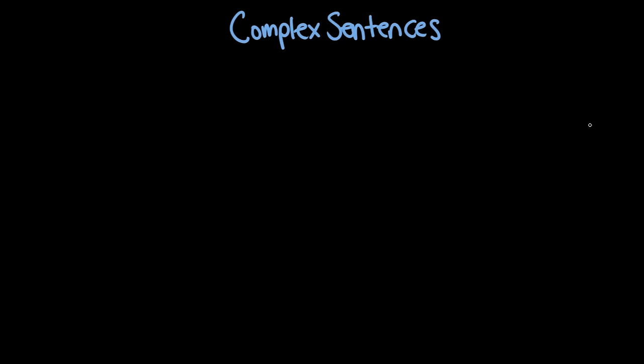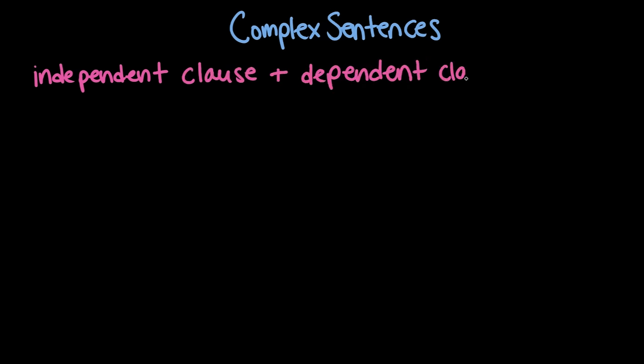Hello grammarians! Hello Rosie! Hi Paige! So in this video we're going to talk about complex sentences. We've talked in another video about simple and compound sentences, so that is like one independent clause or two independent clauses. And with a complex sentence we're going to introduce something called a dependent clause. A sentence needs at least one independent clause to function as a sentence, but with a complex sentence we're going to add this dependent clause.